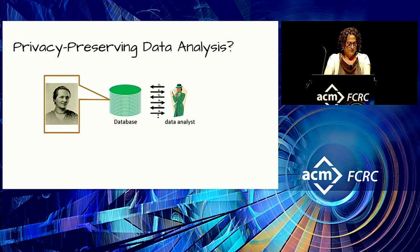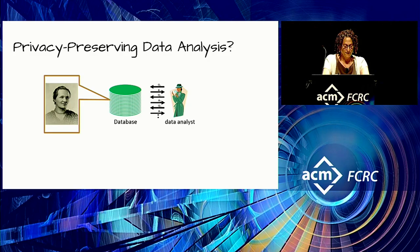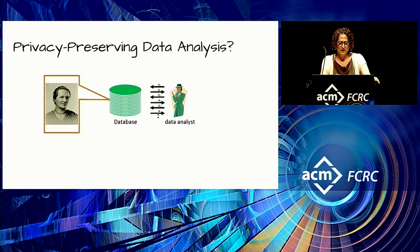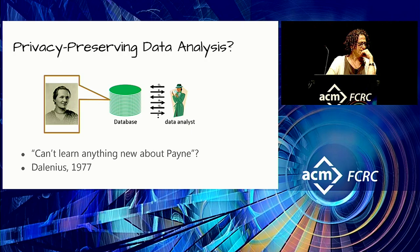This is a picture of Cecilia Helena Payne-Gaposchkin, who was among the first women to obtain a PhD in astronomy. She ascertained the temperatures of different classes of stars and estimated the great abundance of hydrogen in them — much more than on Earth — which contradicted the belief at the time that the sun and the earth had similar composition. Here's Payne in the dataset. How do we protect her privacy? What do we mean by protecting her privacy?